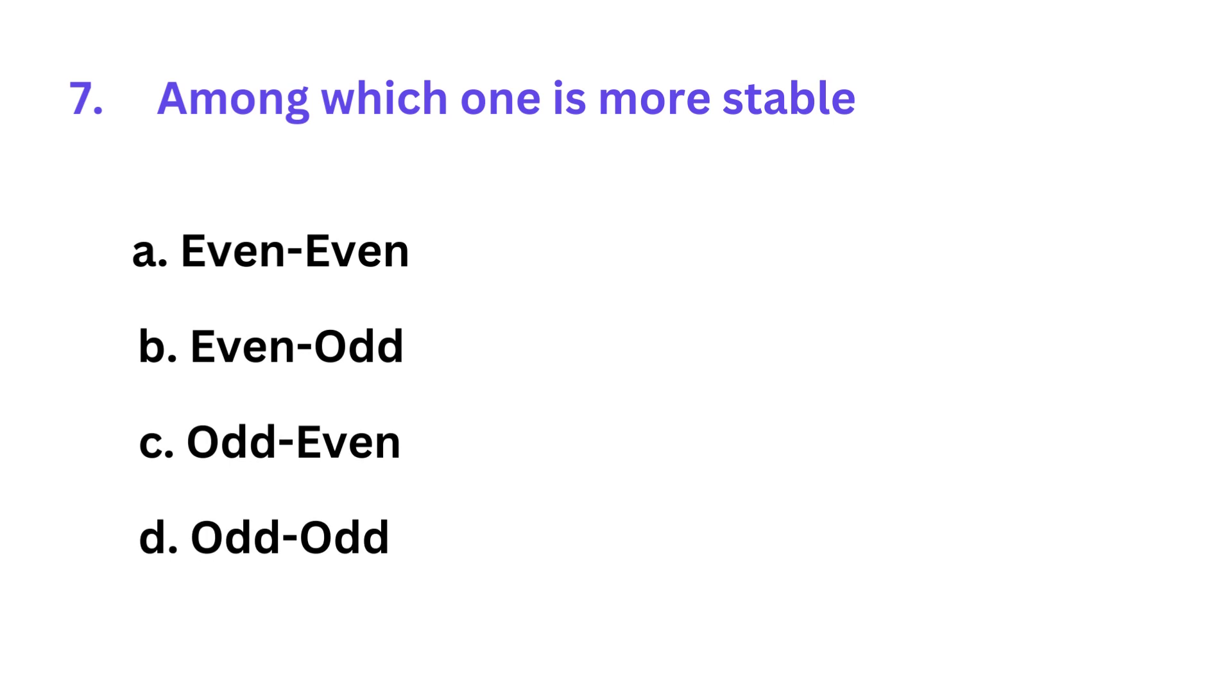Among which one is more stable? A. Even-even nuclei, B. Even-odd nuclei, C. Odd-even nuclei, D. Odd-odd nuclei